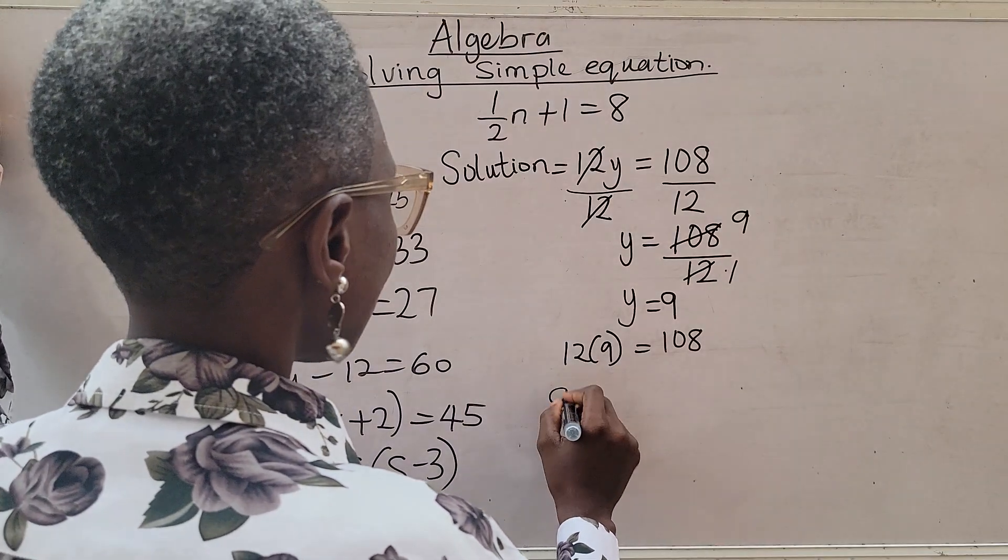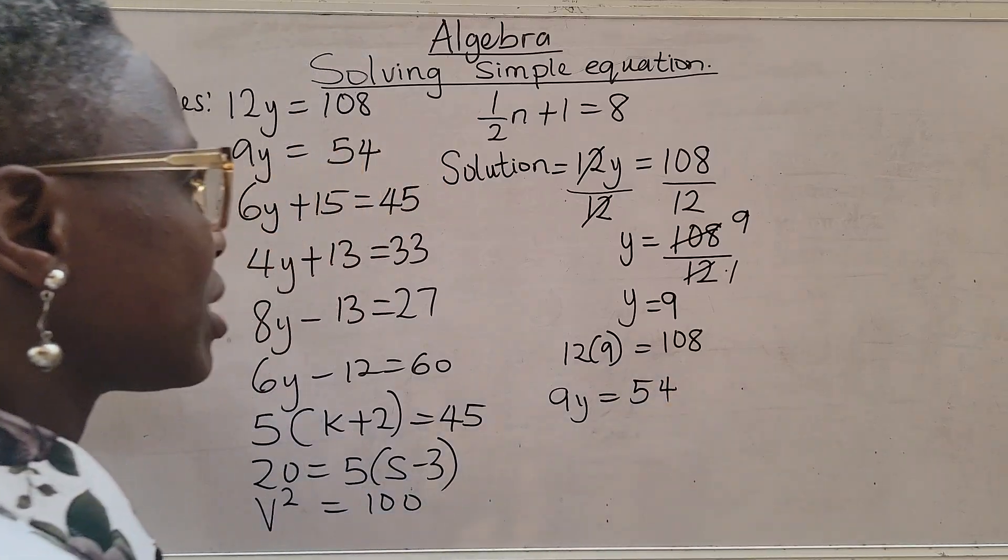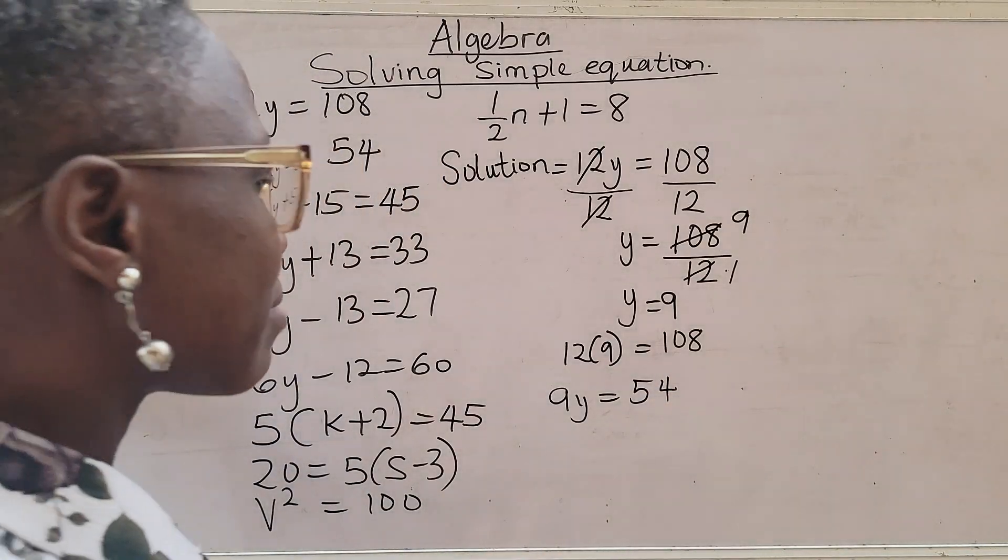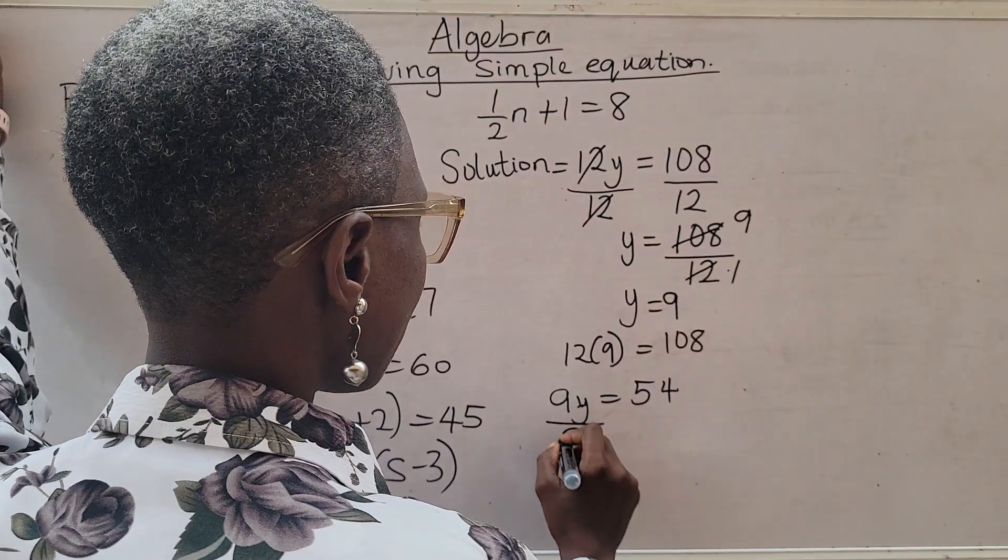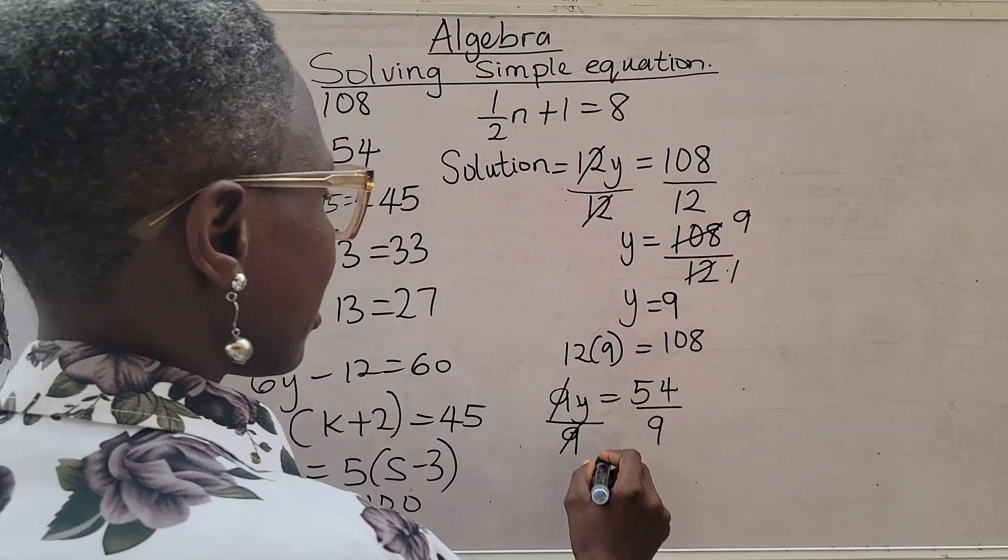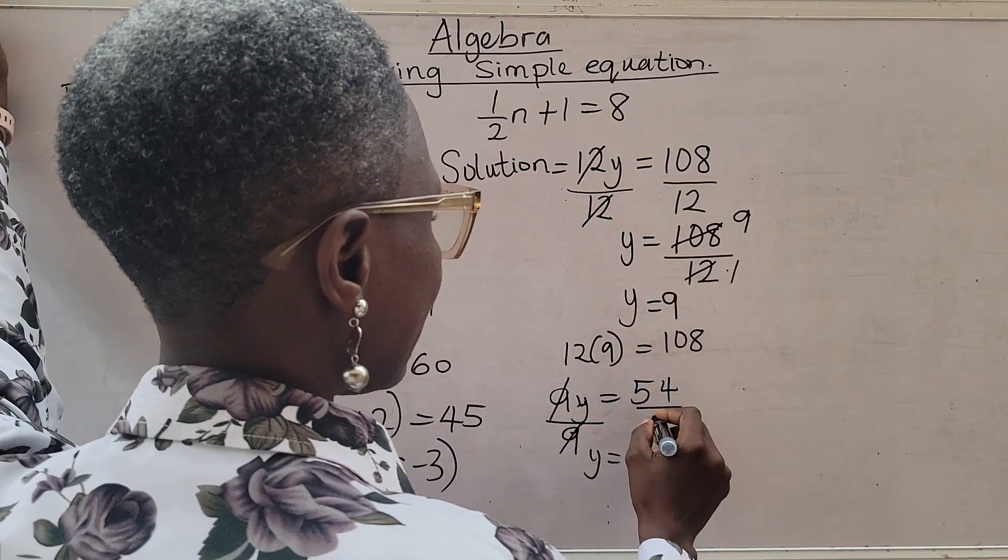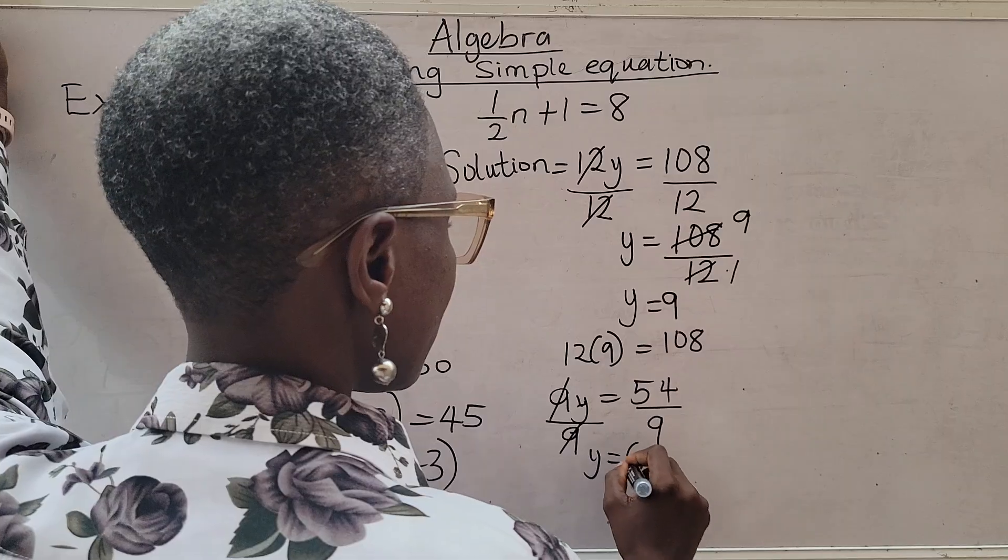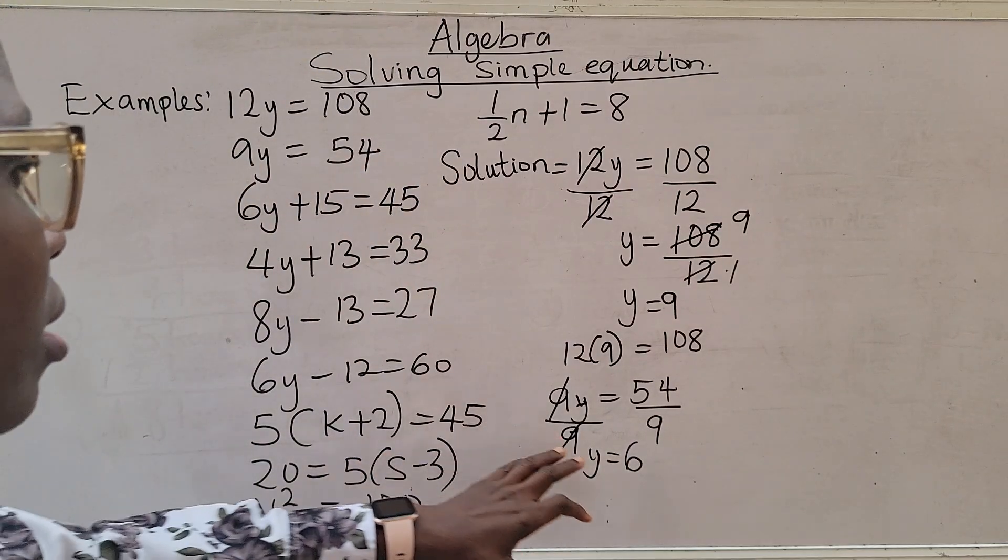Number 2 is also like that. 9y equals 54. Like we did the very first one, divide both sides by the coefficient of y. So we divide it by 9. 9 will cancel 9 and we have y equals 54 divided by 9. That's going to be 6.